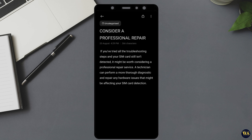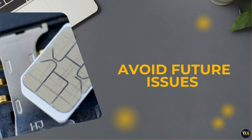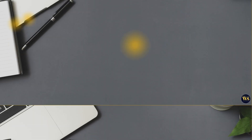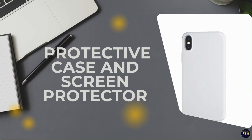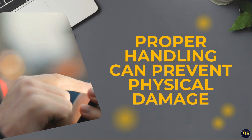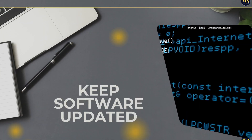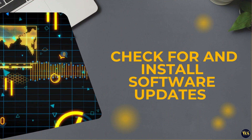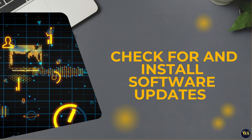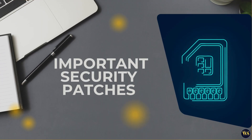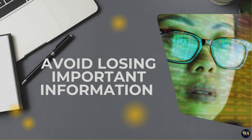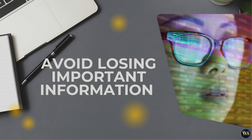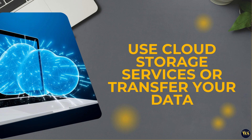Section 5: Preventive Measures. To avoid future issues with your SIM card, here are a few preventive measures to consider. Number 1: Handle Your Phone With Care. Avoid dropping or exposing your phone to liquids. Use a protective case and screen protector to safeguard your device from accidental damage. Number 2: Keep Software Updated. Regularly check for and install software updates to ensure your phone remains up-to-date with the latest fixes and improvements. Updates often include important security patches and bug fixes that can enhance device performance and stability. Number 3: Backup Your Data. Regularly backup your data to avoid losing important information. You can use cloud storage services or transfer your data to a computer or external drive.